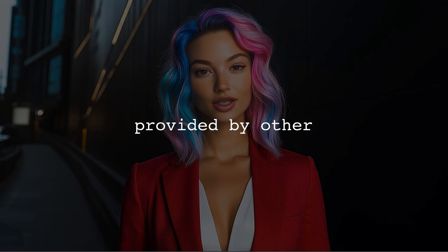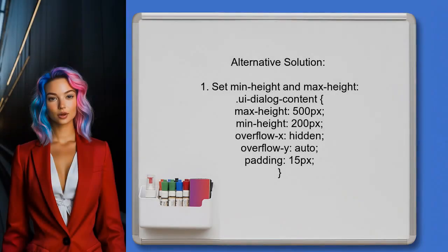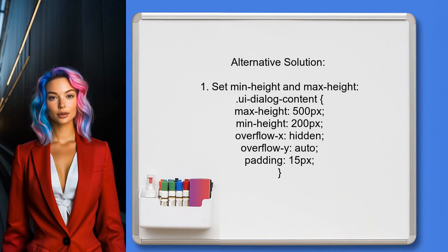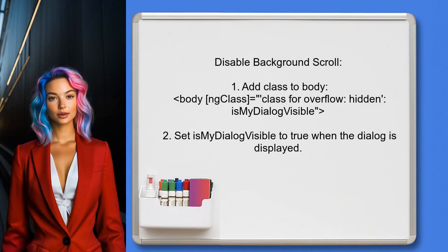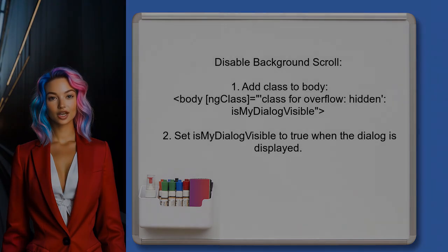Now let's look at answers provided by other users. An alternative solution suggests setting the minimum and maximum height for the P-Dialog using absolute values instead of percentages — this will help manage the dialog's height effectively. To prevent background scrolling while the dialog is open, you can add a class to the body element and set this class based on whether the dialog is visible.